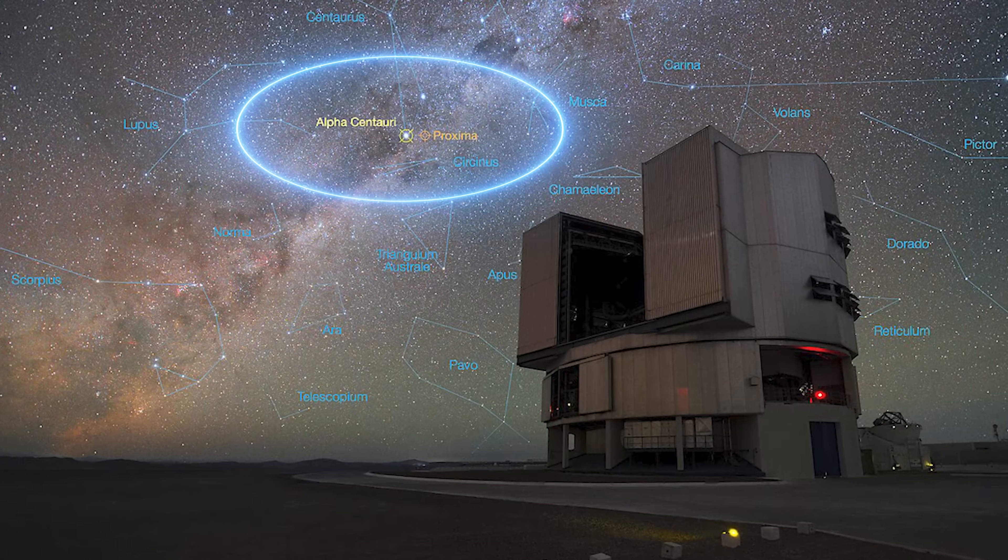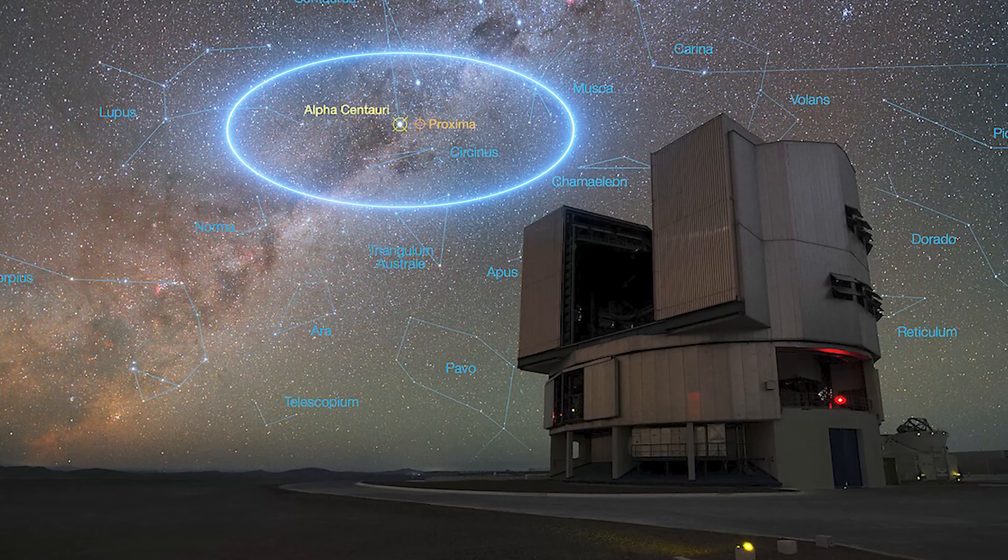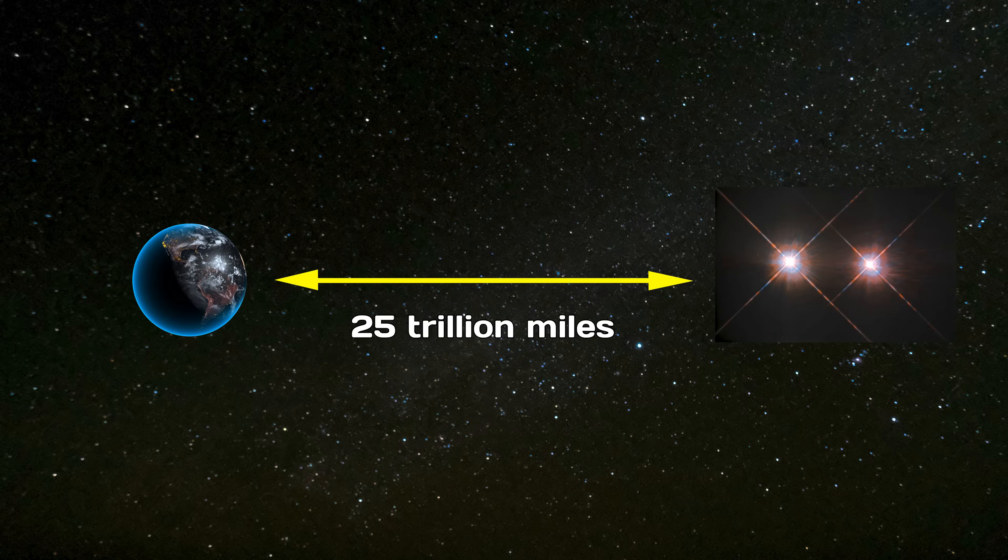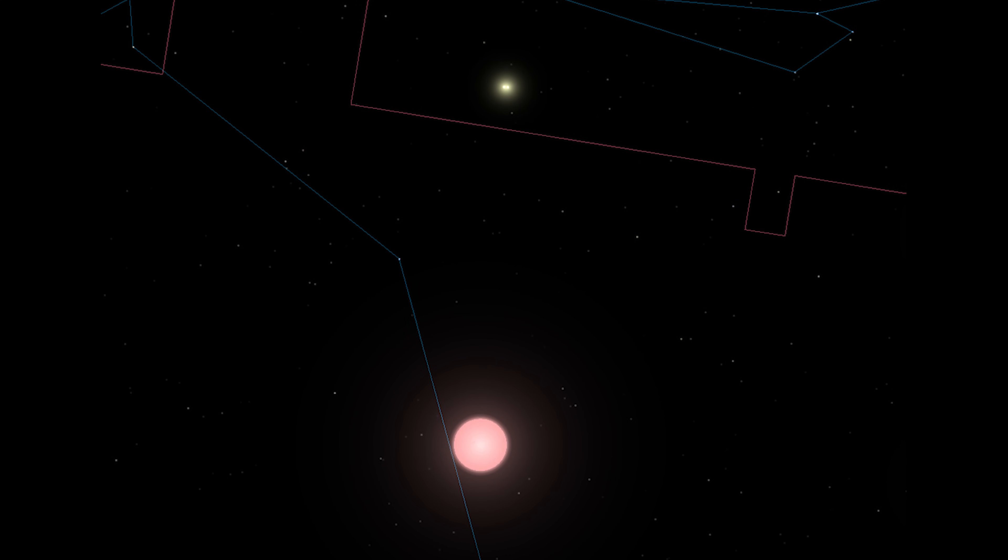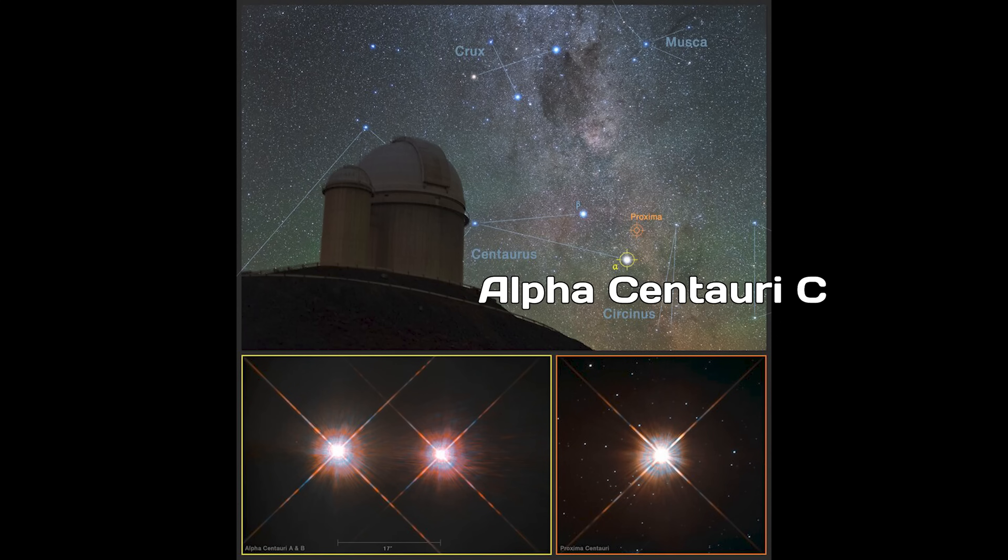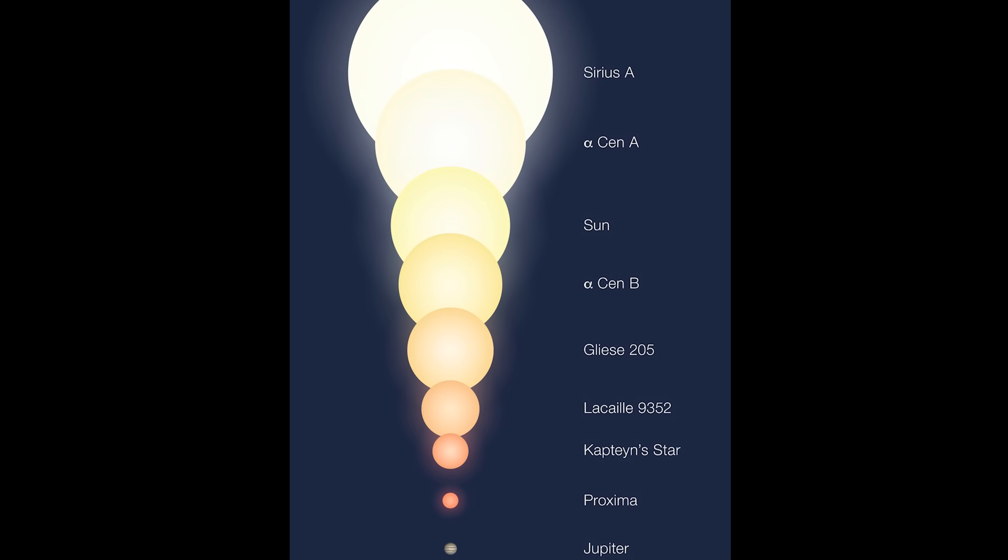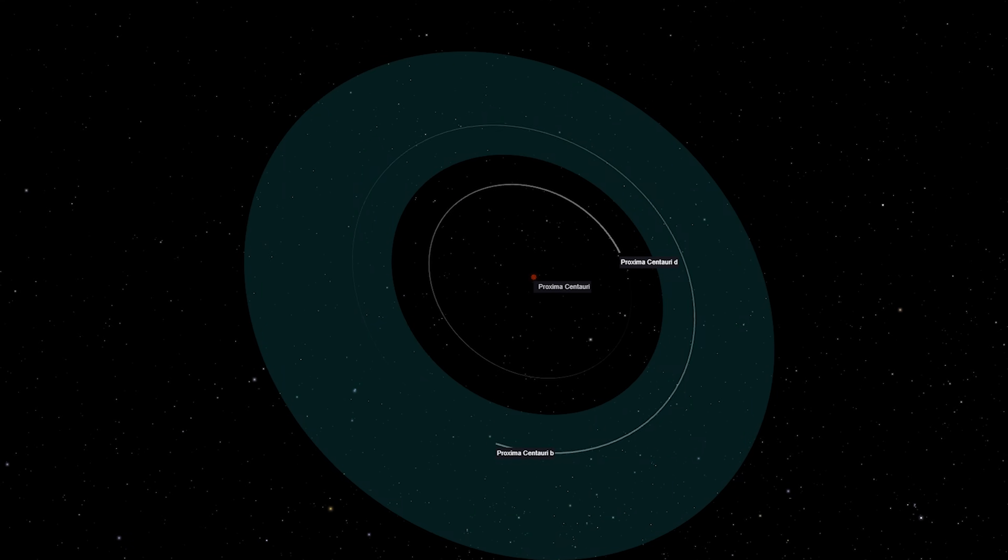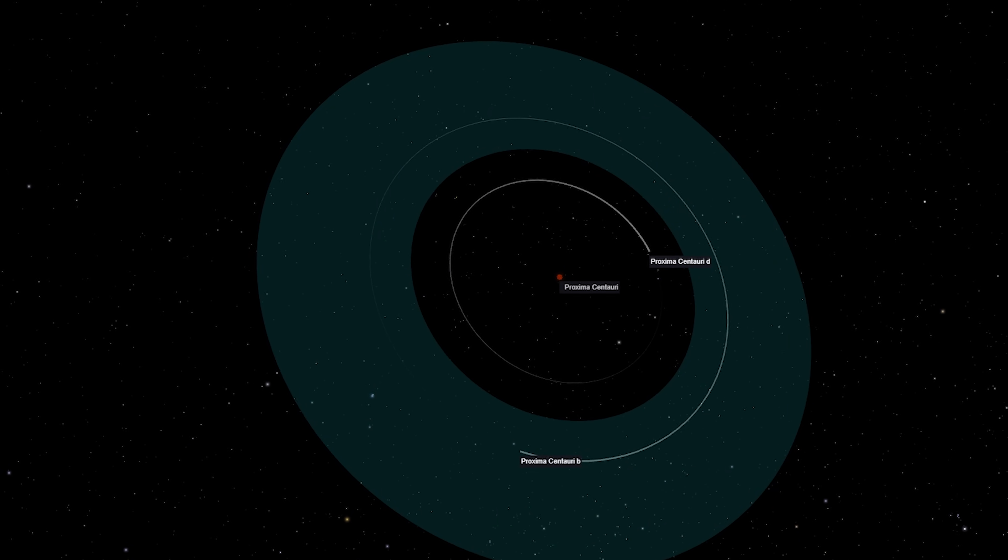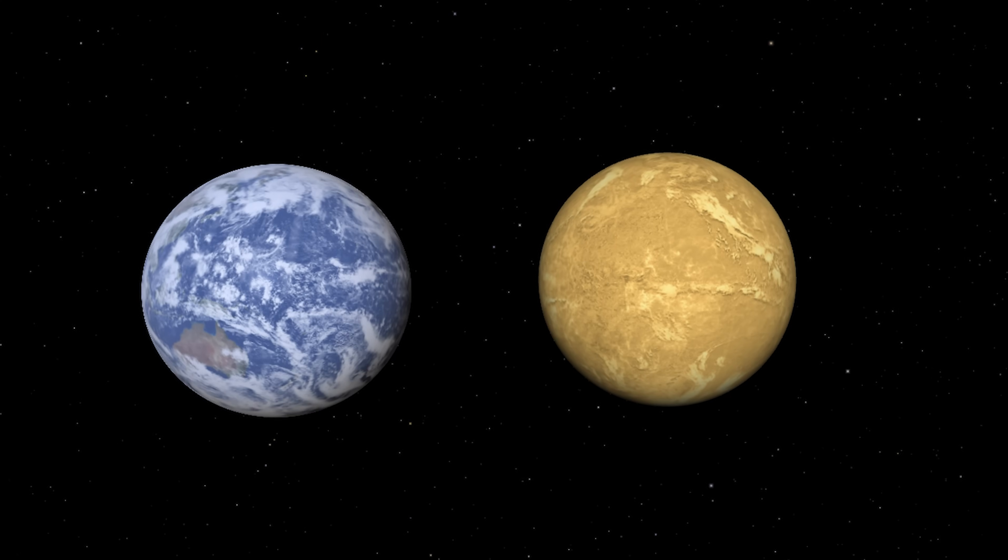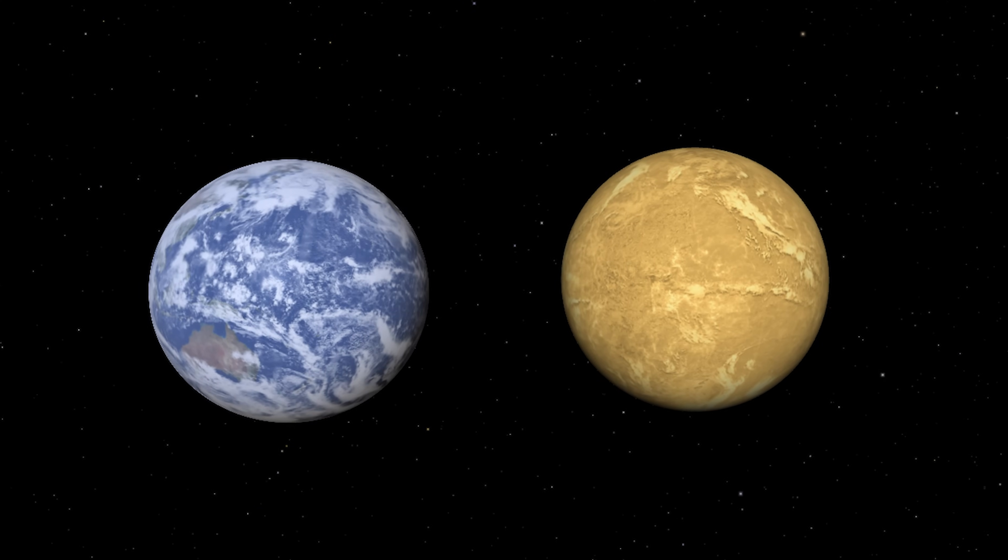One of the most promising options is the Alpha Centauri system. Located approximately 25 trillion miles from Earth, Alpha Centauri is a triple star system consisting of a binary pair, Alpha Centauri A and B, and a third, more distant star known as Alpha Centauri C, also called Proxima Centauri. This third star is currently the closest known star to Earth, and scientists have been able to gather detailed information about the three planets that orbit it. Among them, Proxima B stands out as the only Earth-like candidate.